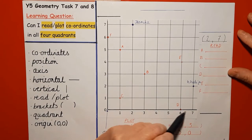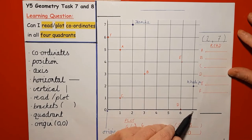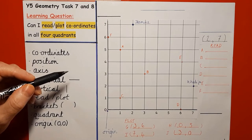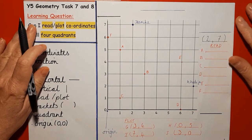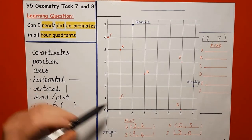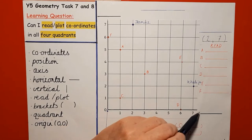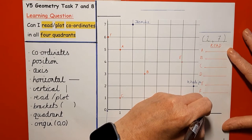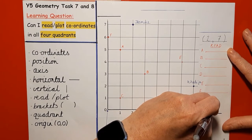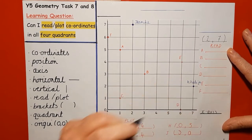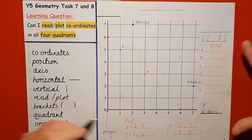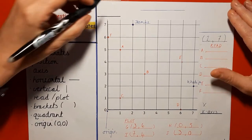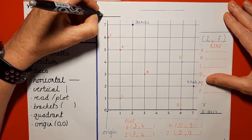We have a horizontal axis here that goes across and we have a vertical axis here that goes up and down. Can you remember the names for each axis? The horizontal axis that goes across — that's easy to remember — it's the X axis. The vertical axis is called the Y axis.